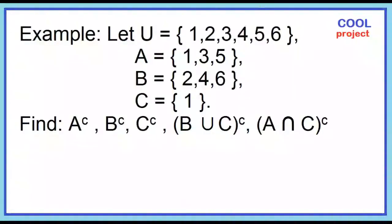Example: Given set U, set A, set B, set C, find the complement of A, the complement of B, the complement of C, the complement of the quantity B union C, and the complement of the quantity A intersection C.